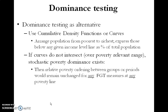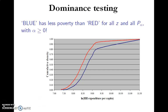This may sound very foreign, but I'm going to give you an intuitive sense of what it entails by looking at actual graphs. Look at this graph with two cumulative density functions — one for society red and another for society blue.